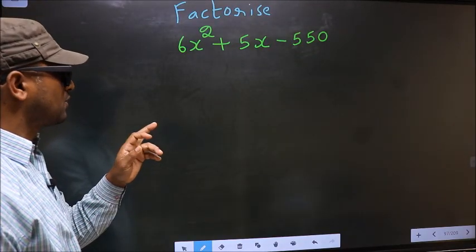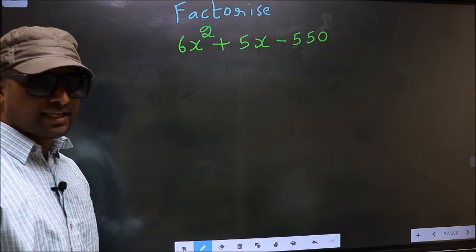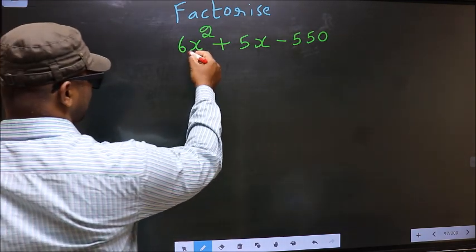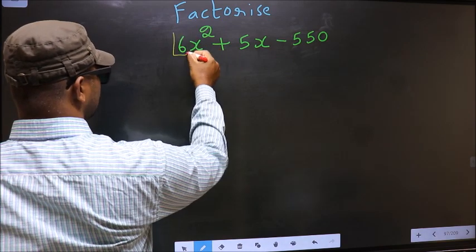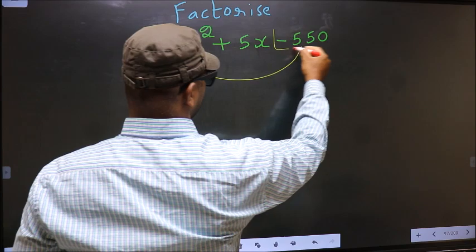Factorize 6x square plus 5x minus 550. To factorize, step 1: the coefficient of x square, that is 6 here, should be multiplied to the constant minus 550.